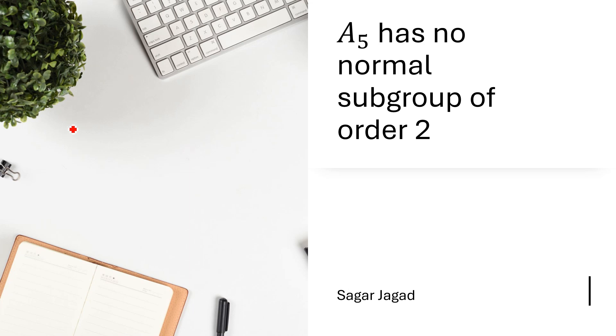More precisely, in one of my previous videos I have proved that A5 is a simple group. That means it does not have any non-trivial normal subgroup. The only normal subgroups of A5 are singleton identity and A5 itself. Any other subgroup of A5 cannot be a normal subgroup. We are going to see a special case of it. Today we'll be proving that any subgroup of order 2 cannot be a normal subgroup of A5.